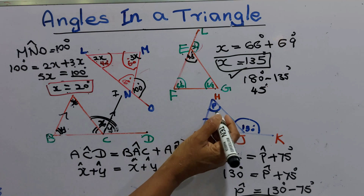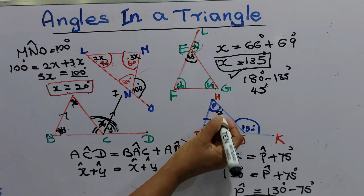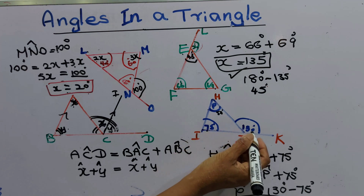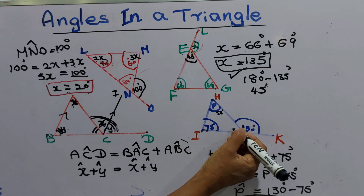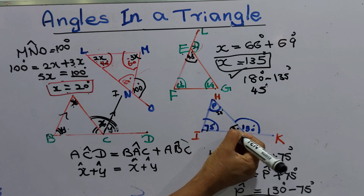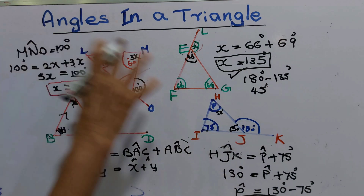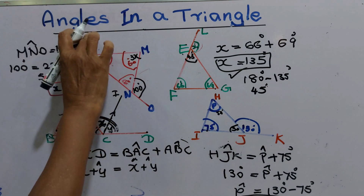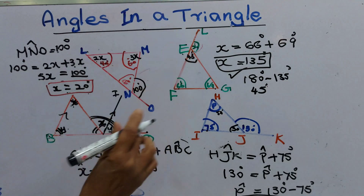We found P as 55 degrees. This is 75 degrees, and this exterior angle is 130 degrees. The straight angle gives 50 degrees. Altogether they give 180 degrees. This is a very easy way to find an angle in a triangle.